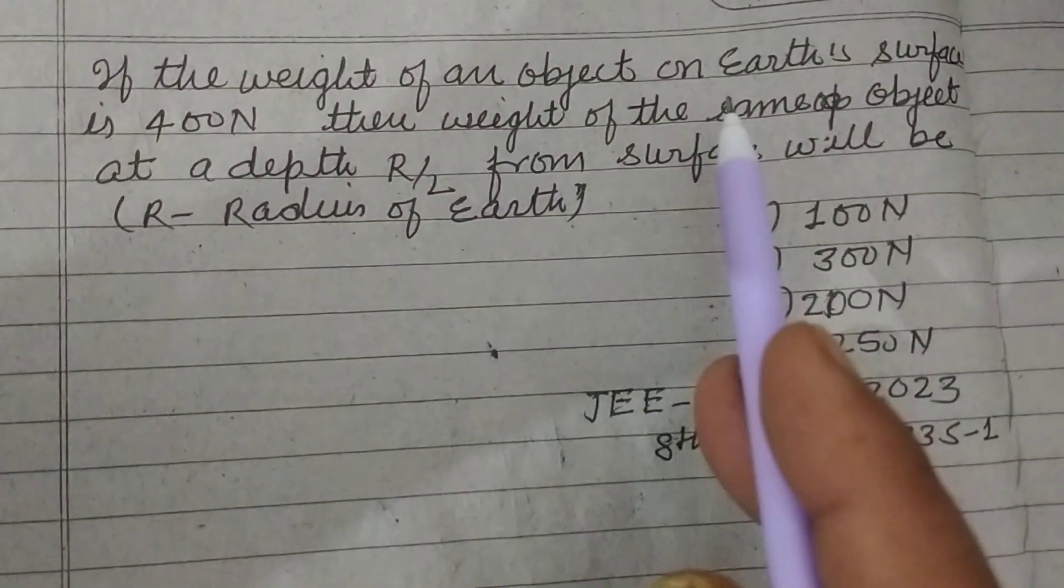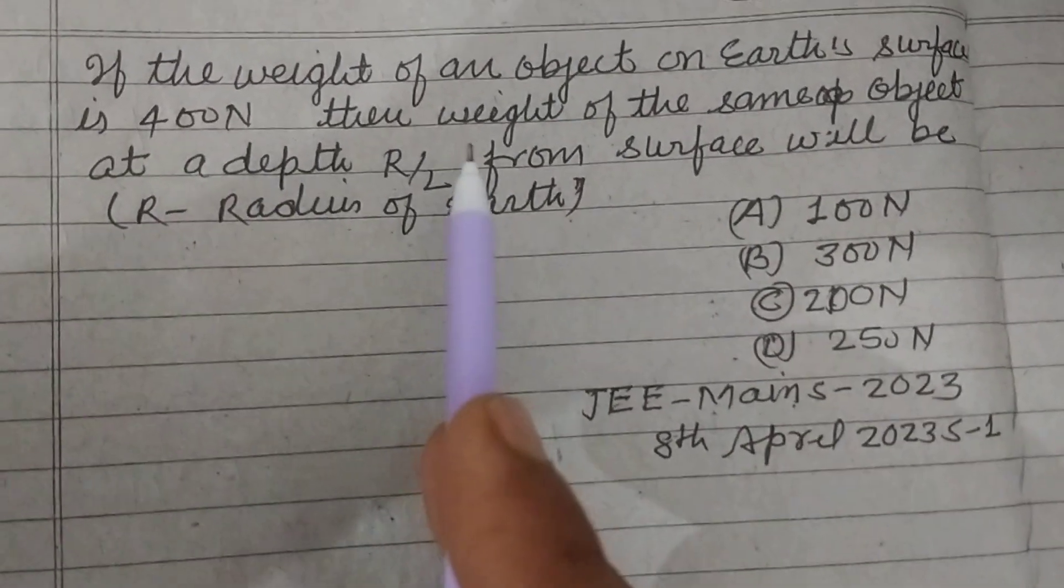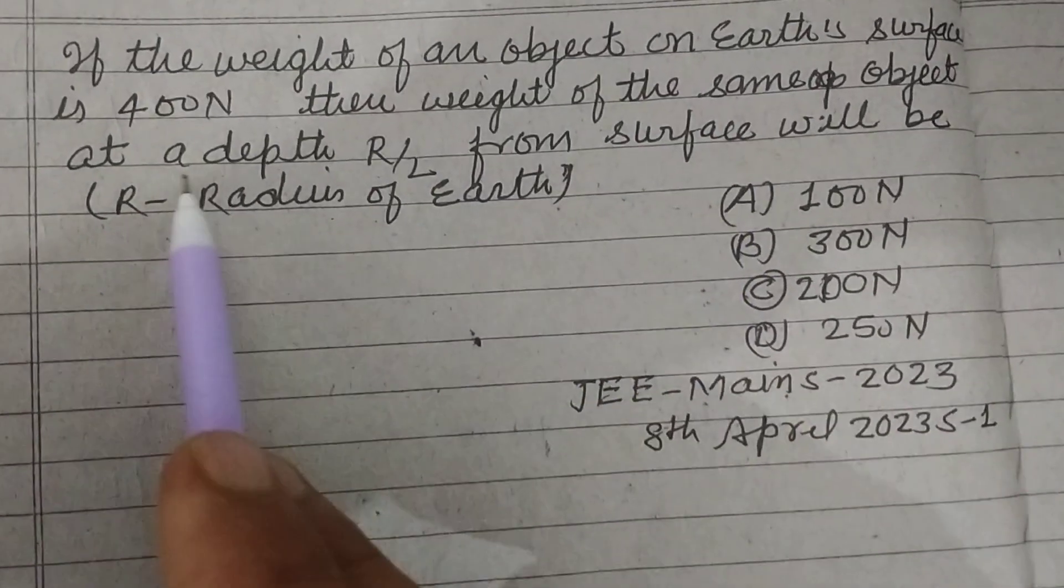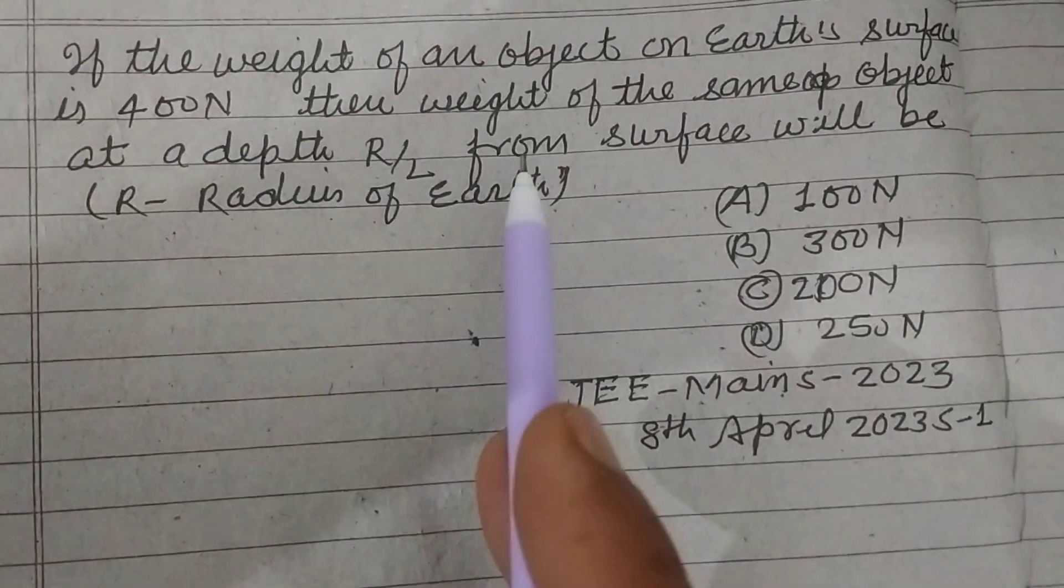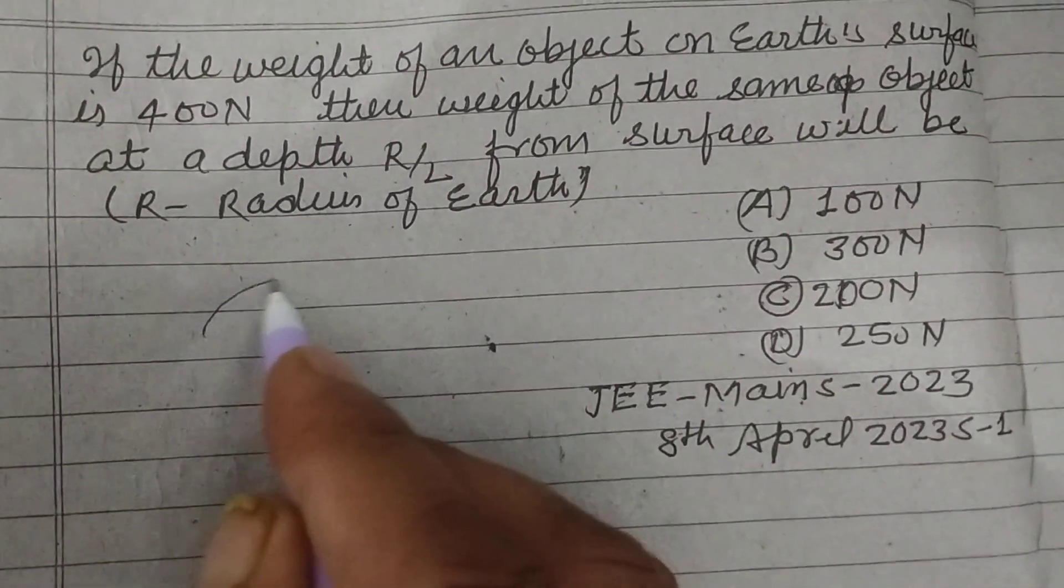If the weight of an object on Earth's surface is 400 Newton, then weight of the same object at a depth r by 2 from surface will be, r is the radius of the Earth. So student,